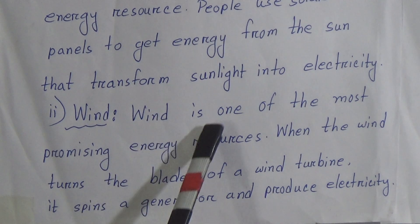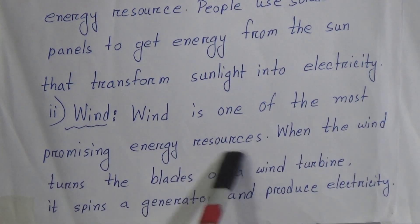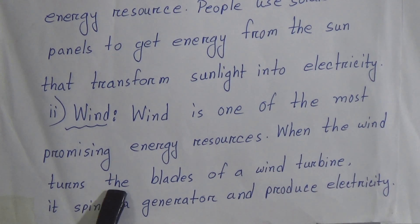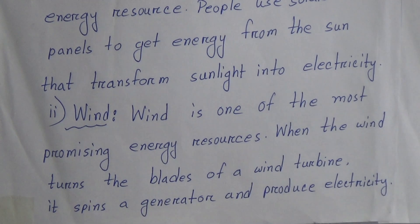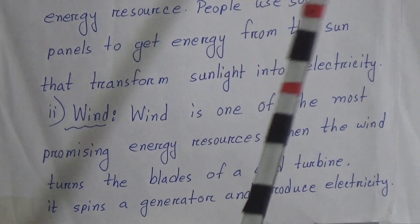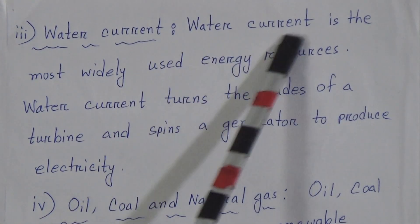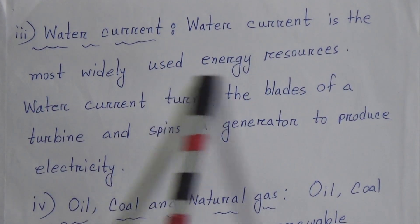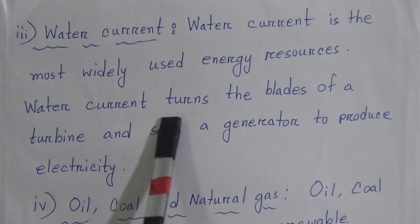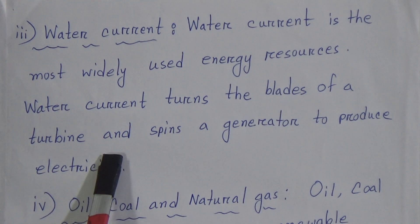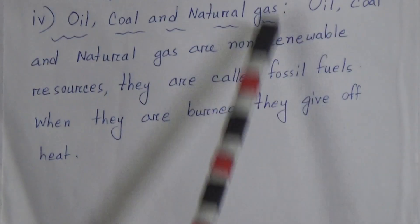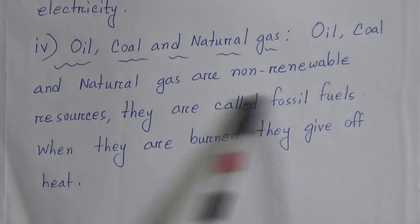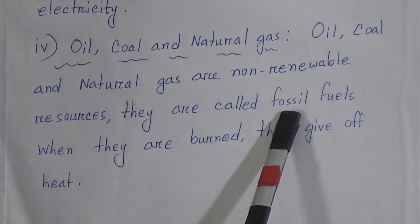Wind is one of the most promising energy resources. When the wind turns the blades of a wind turbine, energy is generated to produce electricity. Water current from streams and oceans is the most widely used energy resource. Water current turns the blades of a turbine and spins a generator to produce electricity. Oil, coal, and natural gas are non-renewable resources. They are called fossil fuels.